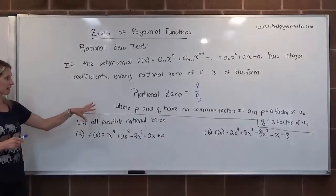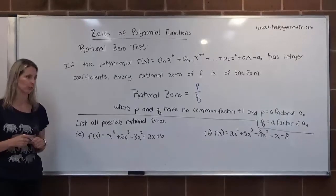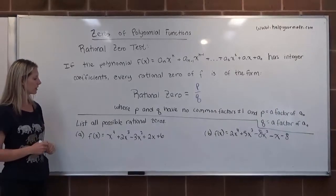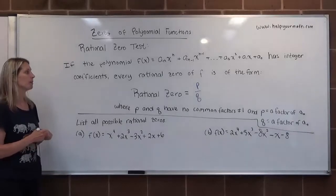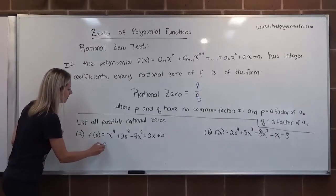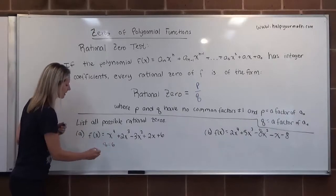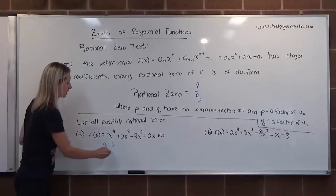Okay, let's just test this out, do some examples here. We're going to list all the possible rational 0s. Here we have F of X equals X to the 4th plus 2X cubed minus 3X squared plus 2X plus 6. So in this case, A sub 0, that would be accurate, would be 6, and A sub N would be the leading coefficient, which is 1.